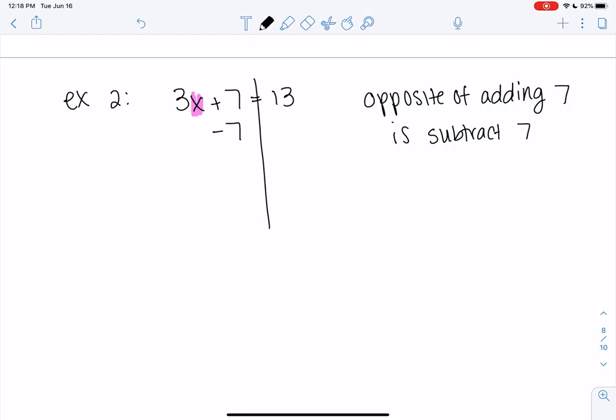So I'm going to go ahead and subtract. Positive 7 minus a 7, those are 0. So I just have 3x on the left side. And that's allowed as long as I do it on both sides. So 13 minus 7 is 6.